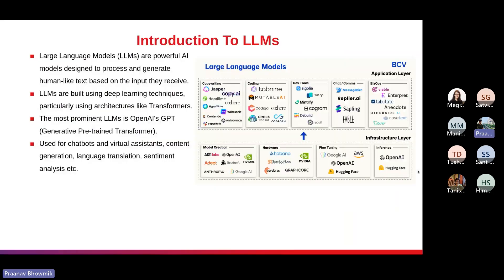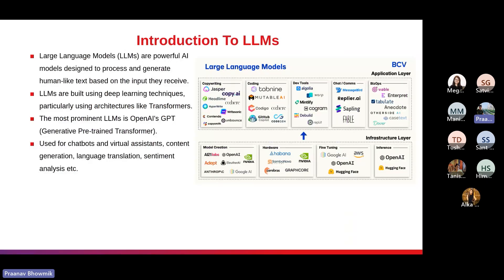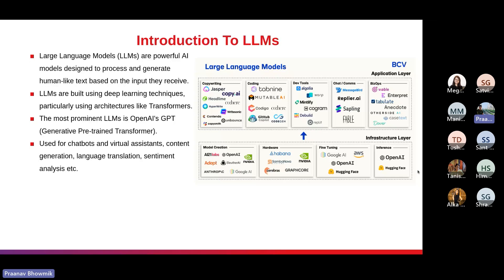LLMs, or large language models, are powerful AI models designed to process and generate human-like text based on input they receive. These models have been trained on vast amounts of data, typically from sources such as Wikipedia. They learn patterns, grammars, and semantic relationships in language. LLMs are built using deep learning techniques, particularly using architectures like transformers, which consist of multiple layers of attention mechanisms that capture contextual dependencies in text. They are trained using unsupervised learning, where models predict the next word given the preceding context.